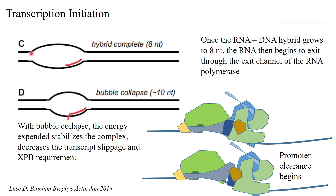With bubble collapse, the energy expended by the winding of the DNA actually stabilizes the complex of RNA pol 2, TF2F, and TF2B. What is also observed is that the XPB is no longer required, and from this point TF2H is also not necessarily bound to the complex that is going to leave the promoter region.